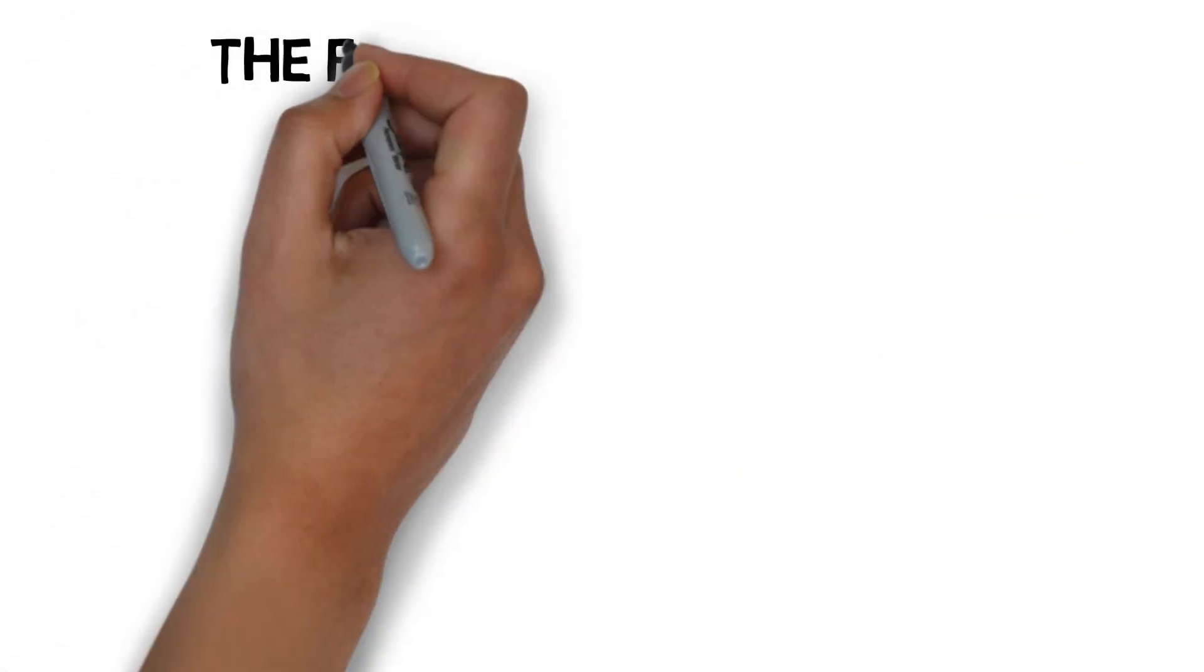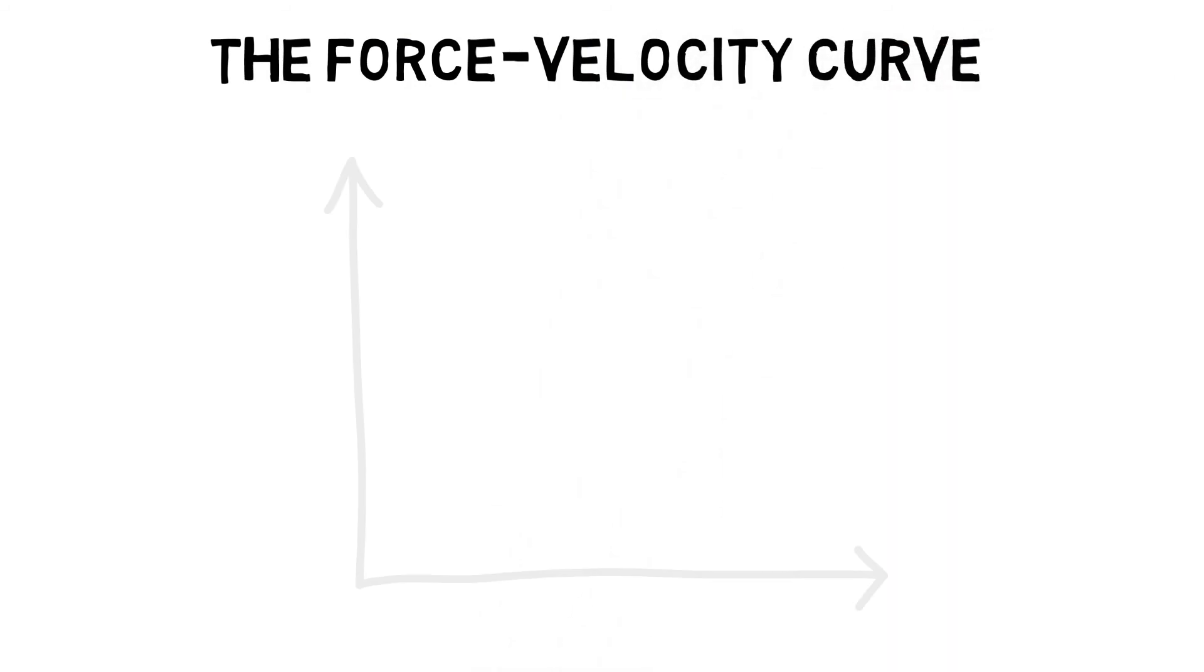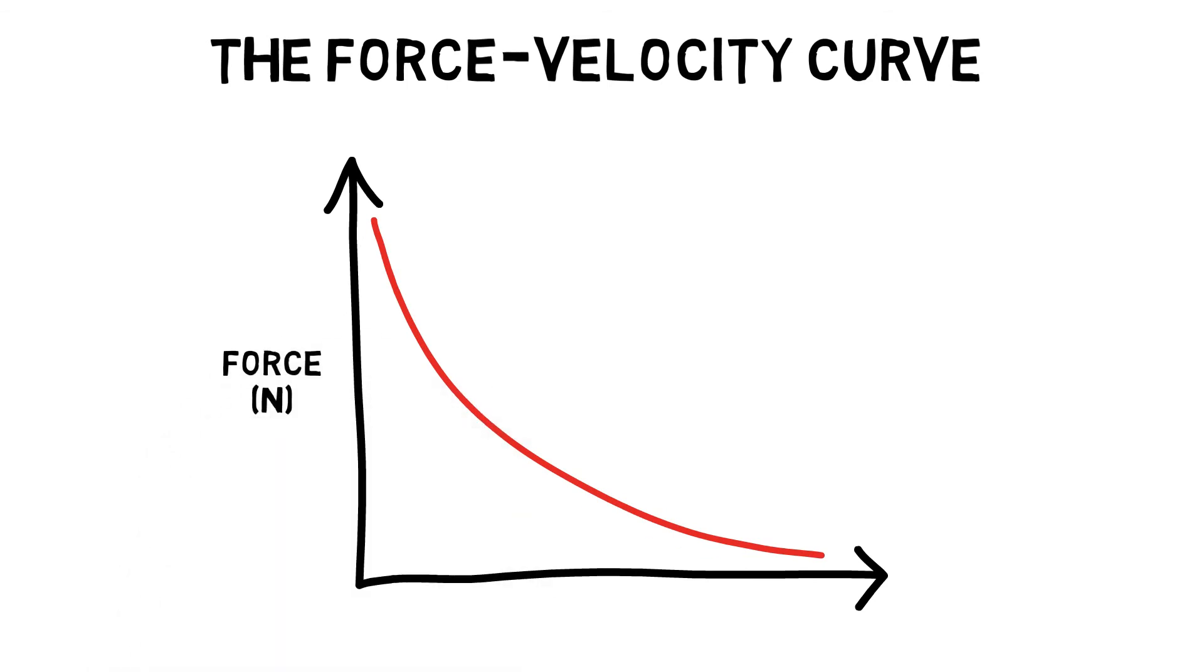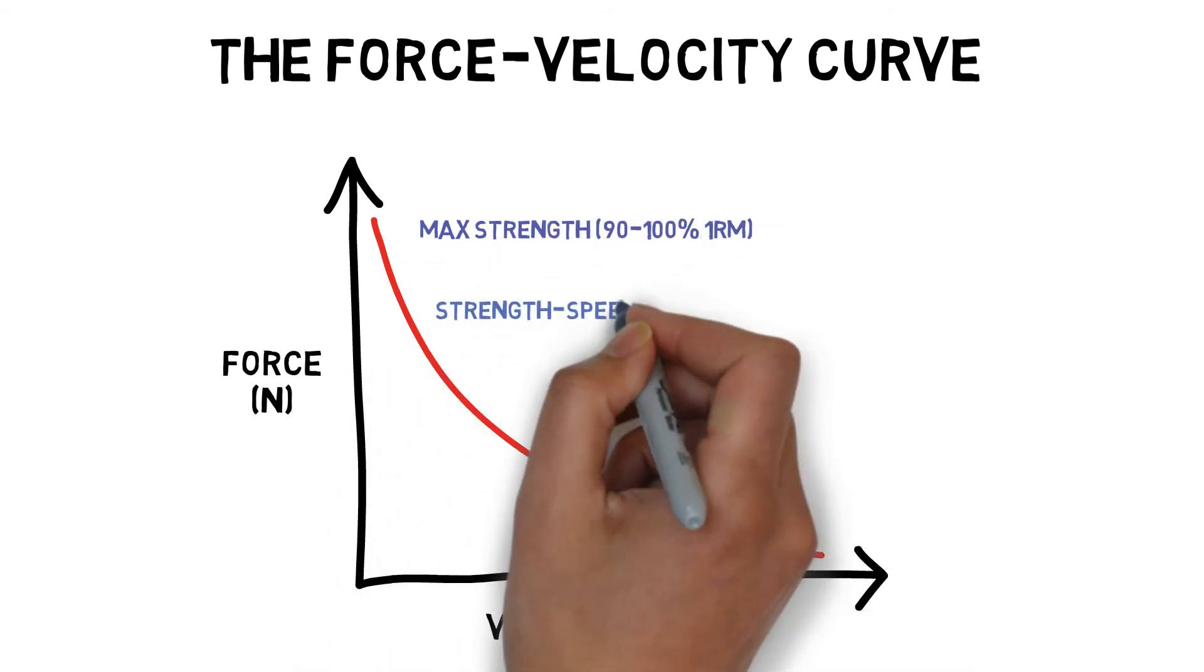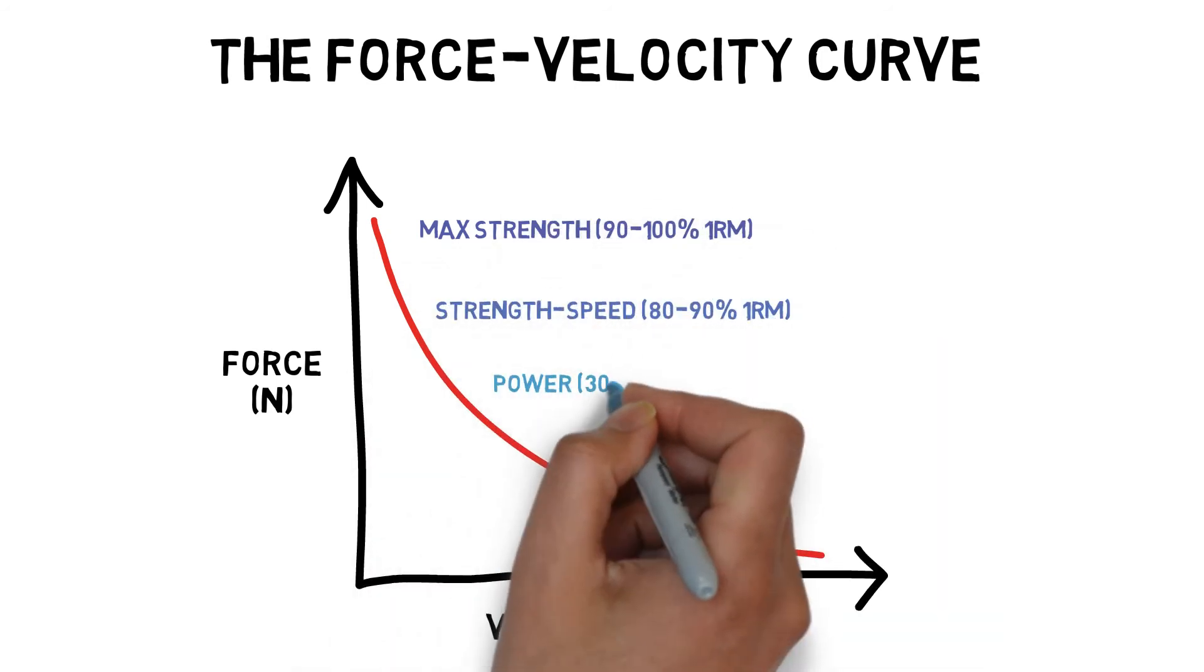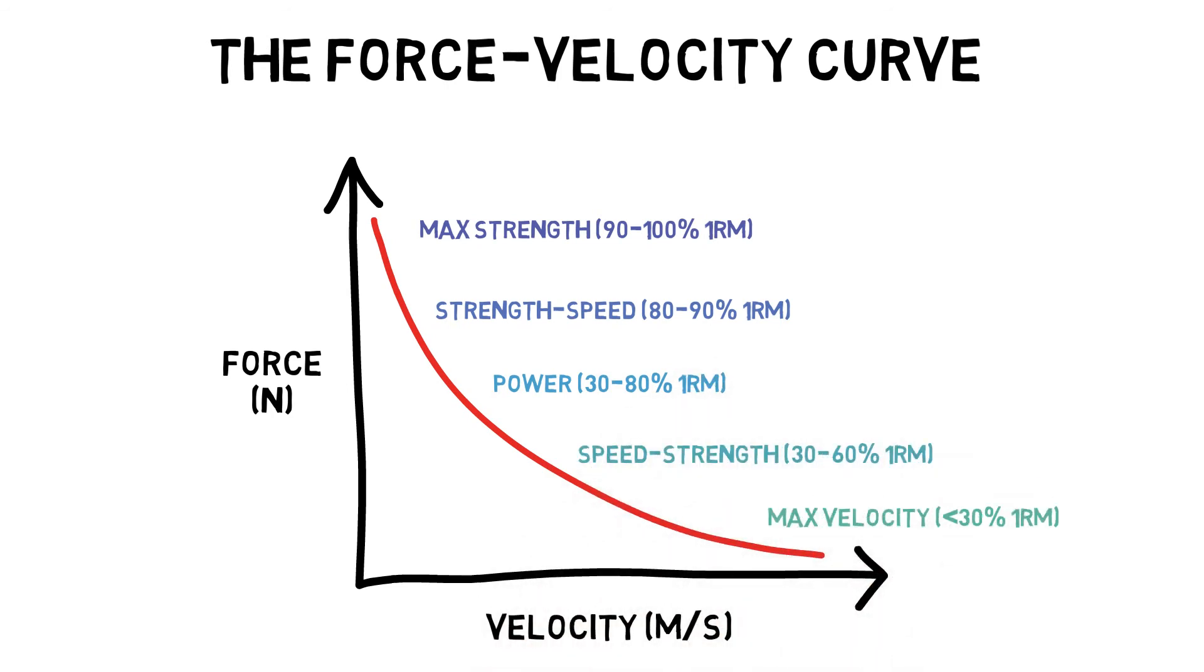The force-velocity curve is the inverse relationship between force and velocity. As the velocity of a concentric contraction increases, its ability to produce force decreases. A one-repetition max, for example, will produce the greatest amount of force but minimal velocity, whereas a maximal velocity movement will produce minimal force.